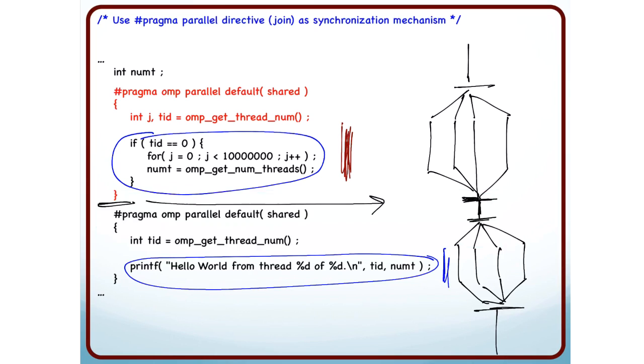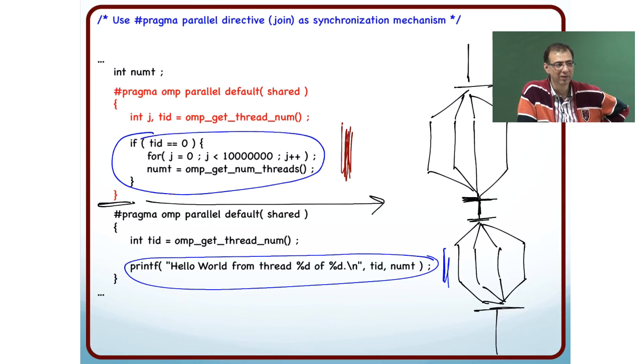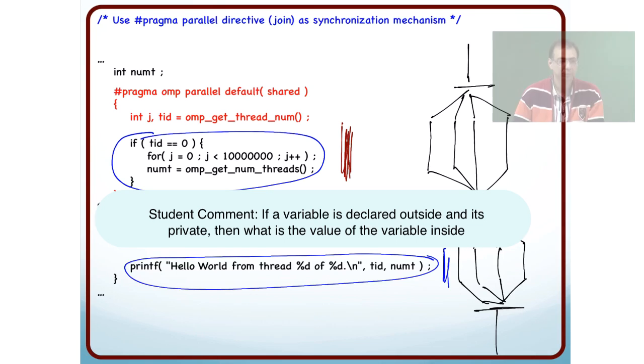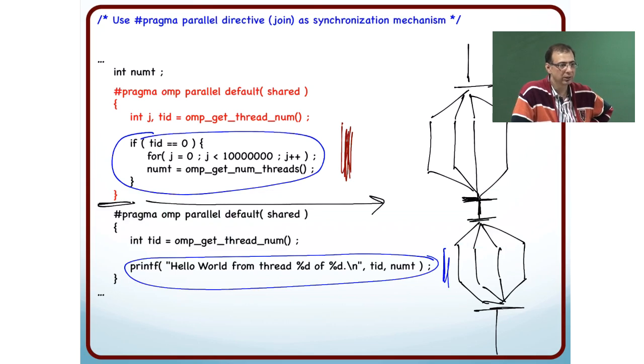You should have a private TID. Well, here I do not need private because it is declared inside the parallel region. Look, I only need to say whether a variable is shared or private if it has been declared outside. So I need to tell you that I want this to be private. Otherwise, OpenMP will treat it as shared. But if I am declaring it inside, it is obvious that it has to be private. You should not assume anything about that. You should be careful to write your programs in a way that you are not dependent on that.